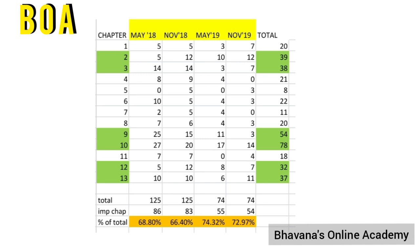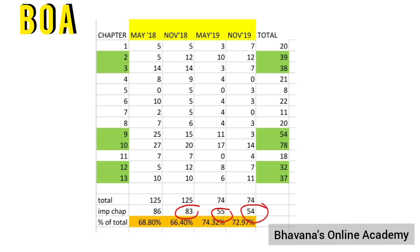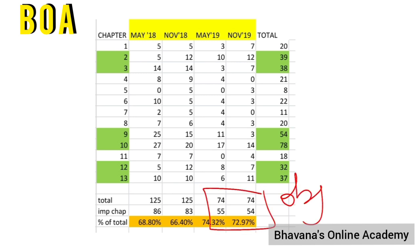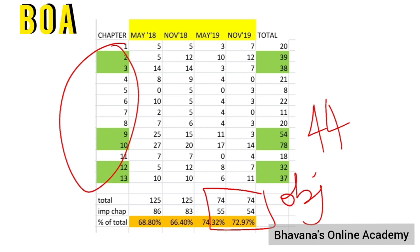In the May 18 attempt, out of 125 marks, 86 marks came from these six chapters. In November 18, 83 marks came from them. In May 19, 55 out of 74 marks, and in November 19, 54 out of 74 marks came from these six chapters. You can clearly see how you can pass and score exemption by focusing on them. If objective questions from these chapters were also included, the total would easily touch 65 to 75 marks.